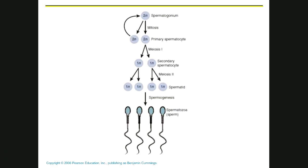This is the second part of human anatomy and physiology for reproduction. Last time we talked about the anatomy of the male reproductive system, and today we're going to talk about how it works. Here's a quick overview of how it works. Remember, we're going to talk about both types of reproduction.